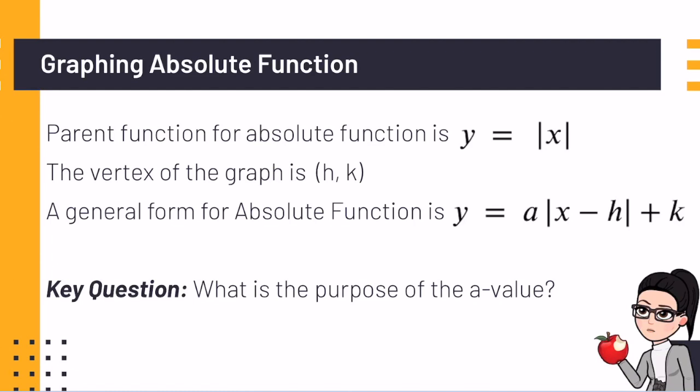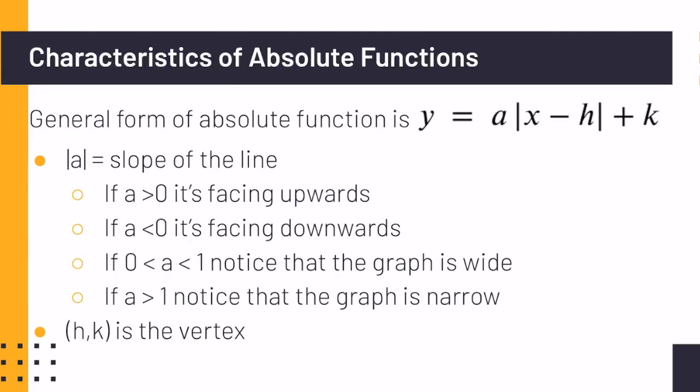The general form for the absolute function is y equals a absolute value of x minus h plus k. One of your goals was to figure out what is the purpose of the a value. As you went through the exercises, you should have noticed that the absolute value of a is the slope of the function.